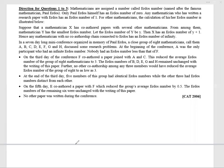This is a very complicated set from CAT 2006. Mathematicians assigned a number called Erdős number, named after the famous mathematician Paul Erdős. Only Paul Erdős himself has the Erdős number zero. Any mathematician who has written a research paper with Erdős has an Erdős number of one.